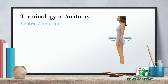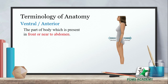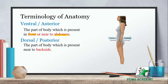Our first terminology is ventral or anterior. The part of body which is present in front or near to the abdomen is called ventral or anterior. Body کا وہ part ہوتا ہے جو front یعنی سامنے کی طرف پڑا ہوتا ہے جہاں پہ face ہوتا ہے۔ کسی آرگنیزم کا جس طرف face ہوتا ہے اس کو front کہتے ہیں، اس طرف جو body کا part پڑا ہوتا ہے اس کو ہم بولتے ہیں anterior یا ventral۔